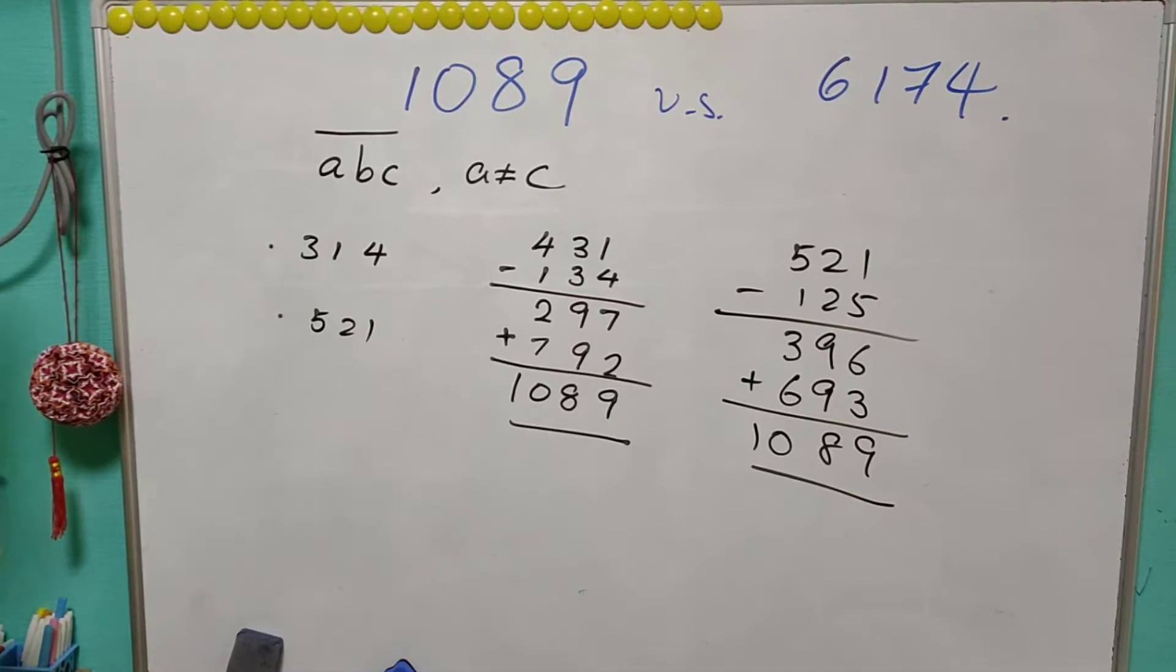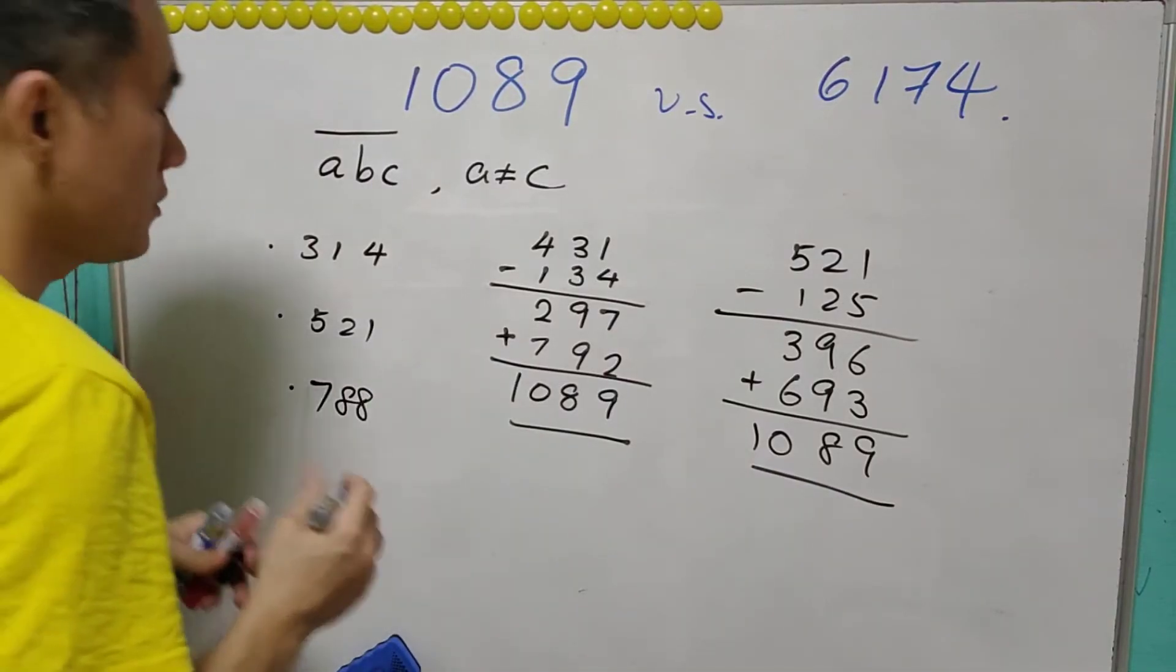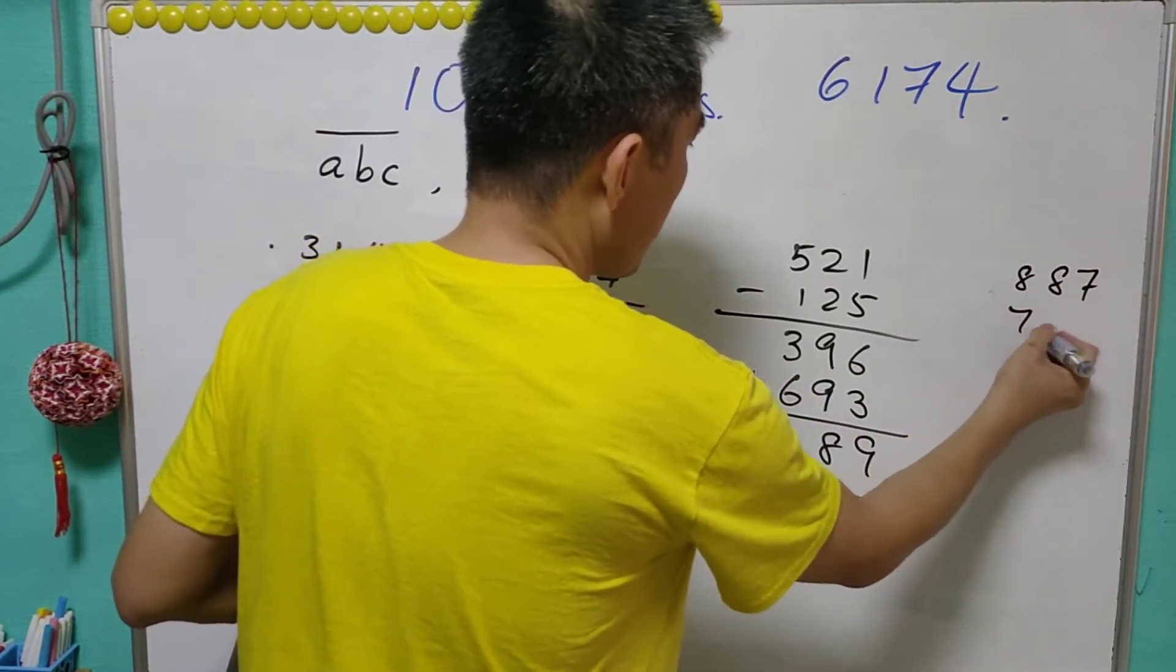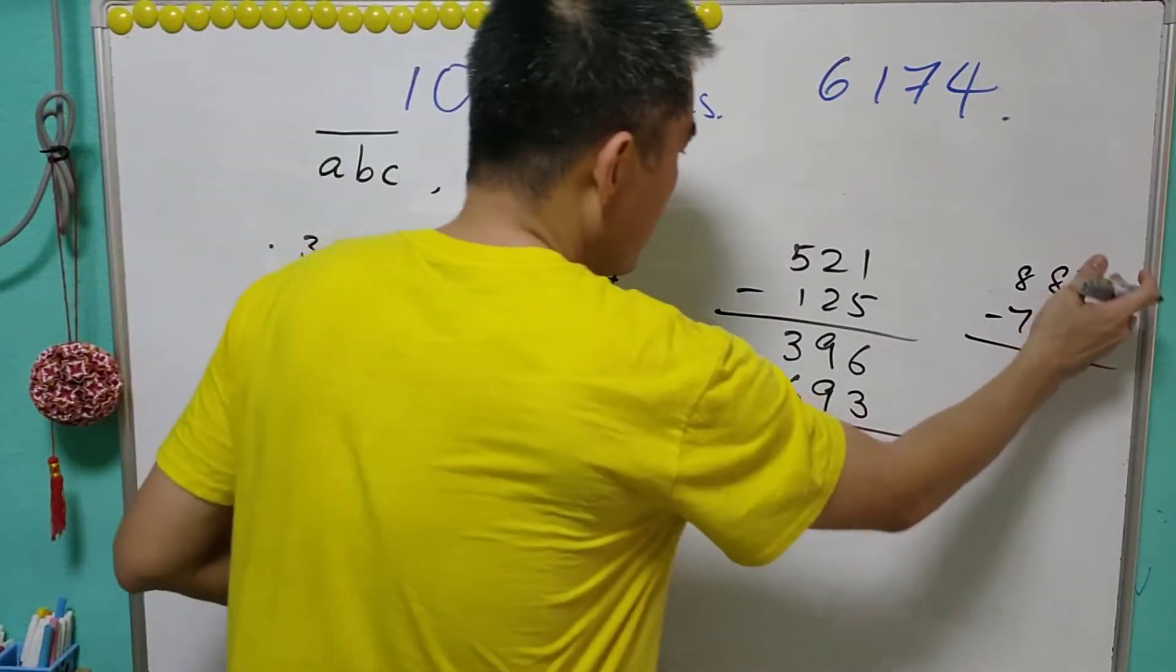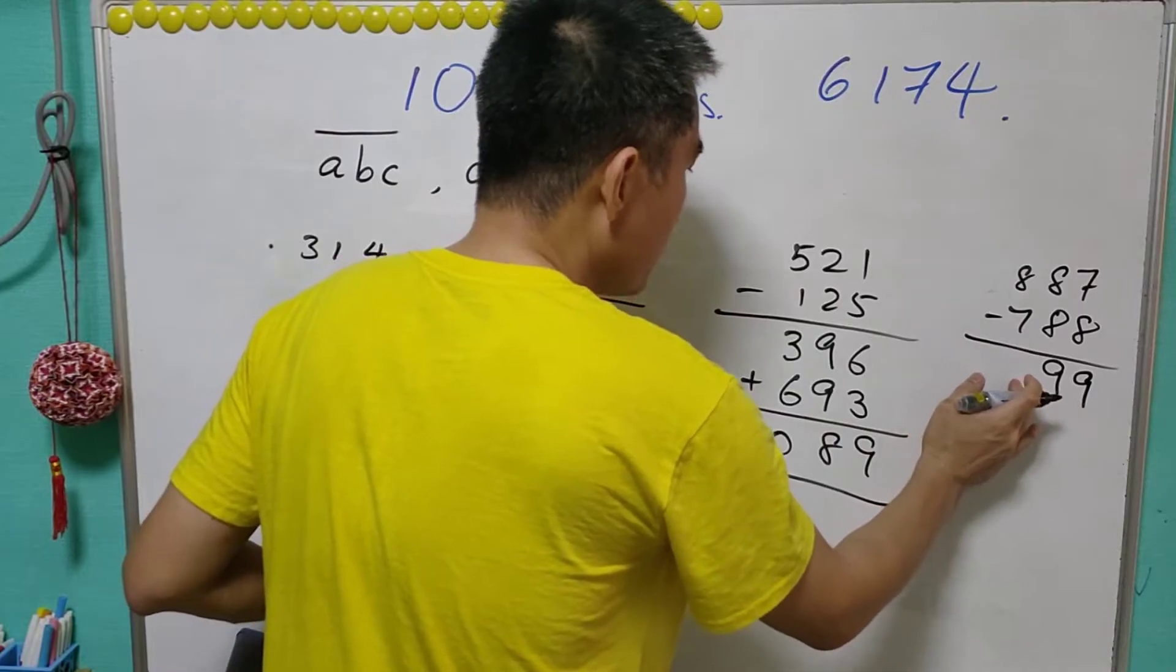However we need to be cautious when it is like 788. So for 788 the largest is 887, the smallest is 788. When you take this difference, it is only a two digit number: 99.